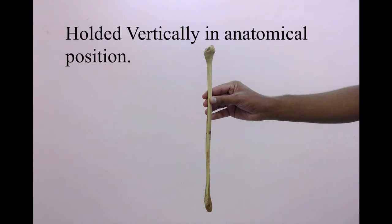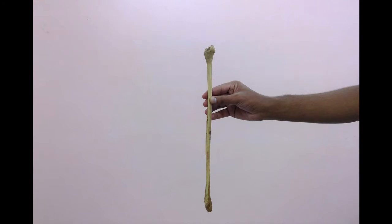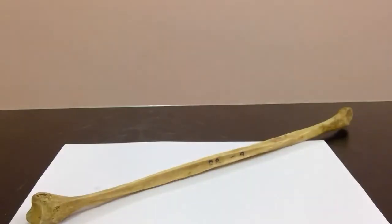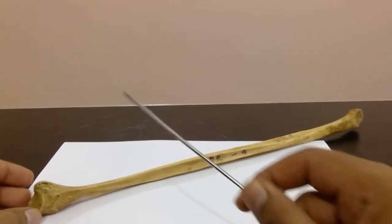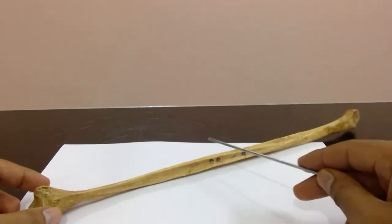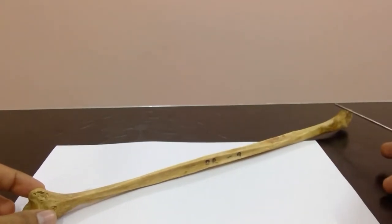The bone fibula is held in its anatomical position, held vertically. The upper end or proximal end is slightly expanded in all directions. The lower end or the lateral malleolus is expanded anteroposteriorly and is flattened from side to side. We will look at its general features, site determination, and major attachments, beginning with the proximal end, then the shaft, and then the lower end.